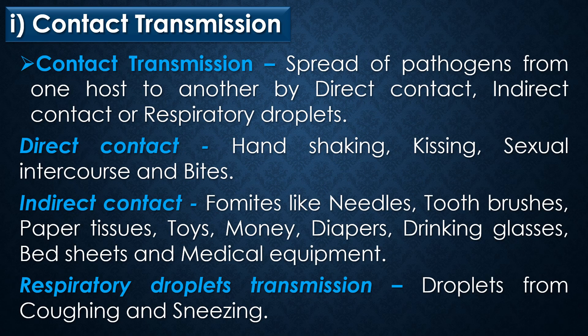The first mode of transmission is contact transmission — the spread of pathogens from one host to another by direct contact, indirect contact, or respiratory droplets. Direct contact includes handshaking, kissing, sexual intercourse, and bites. Indirect contact involves fomites like needles, toothbrushes, paper tissues, toys, money, diapers, drinking glasses, bedsheets, and medical equipment. Respiratory droplet transmission occurs through droplets from coughing and sneezing, which can spread microbes up to an average of 6 meters.